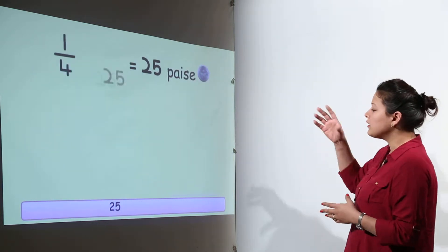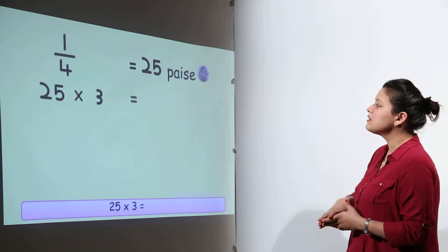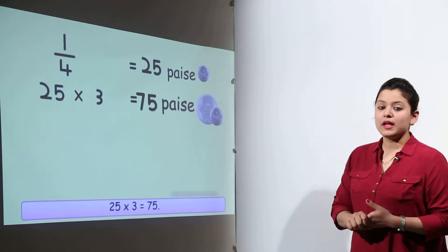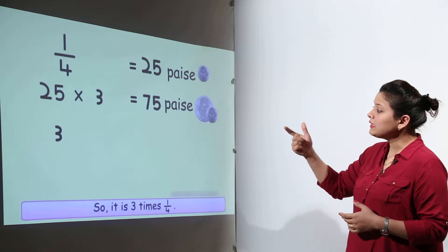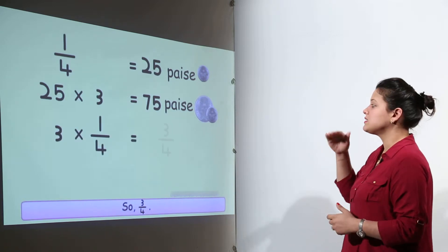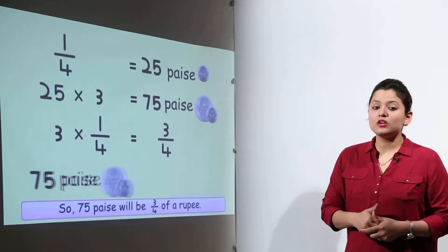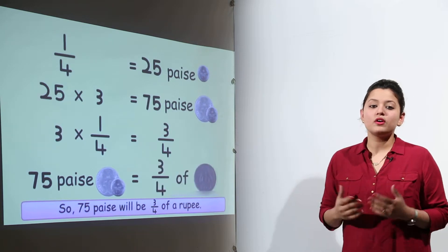Now next is the one-fourth. So one-fourth of a rupee gives us 25 paisa, and that if multiplied with 3 gives us 75 paisa. So we can call it the three-fourth of a rupee.